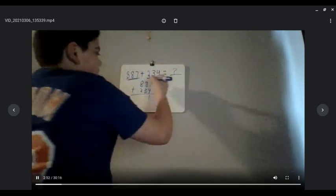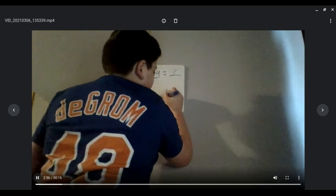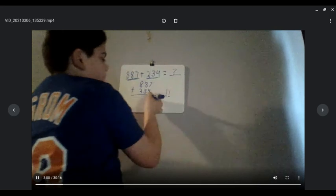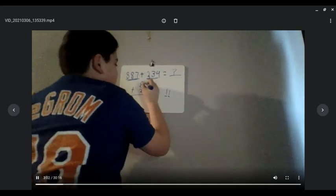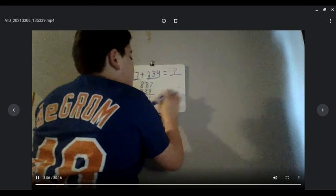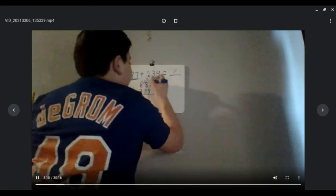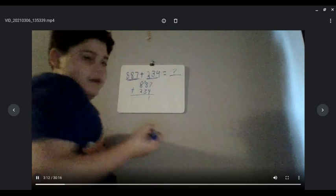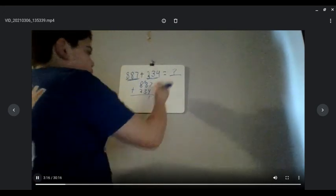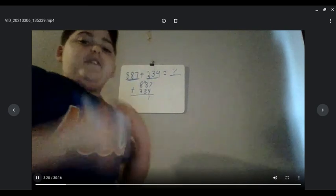And now we have to carry. Since 11 is two digits, we're going to take one digit — put the 1 down here, and the other 1, a little smaller, up top there. And now, since that's an 8, that's like a plus 1. So 8 plus 3, and that's 11.